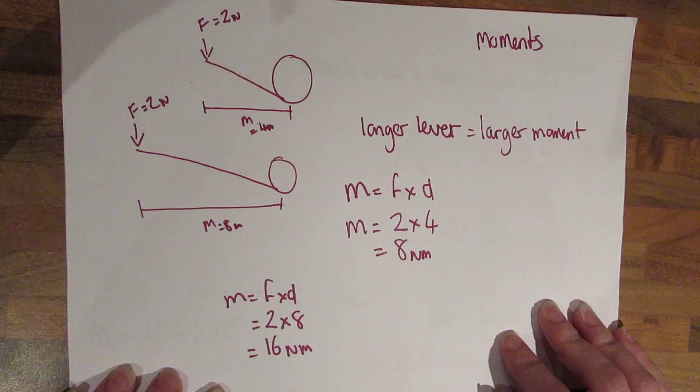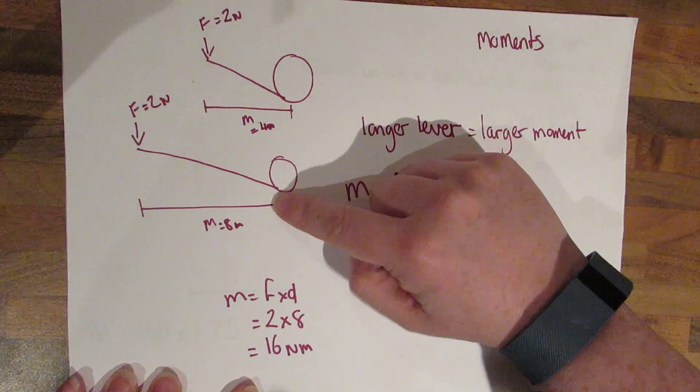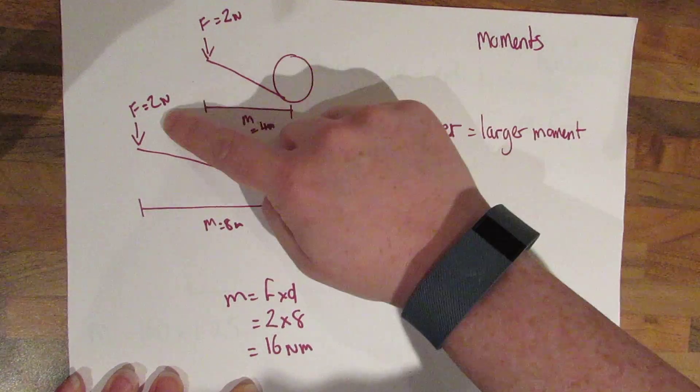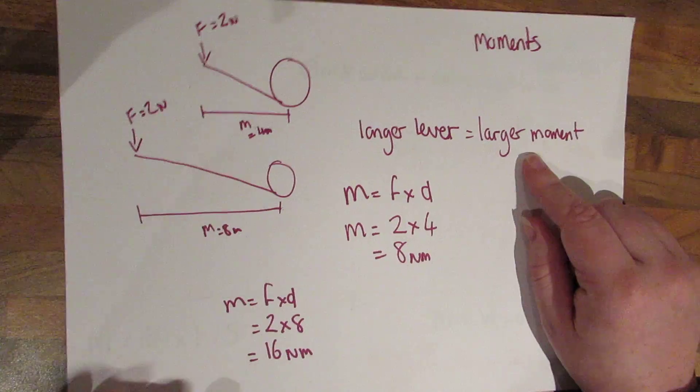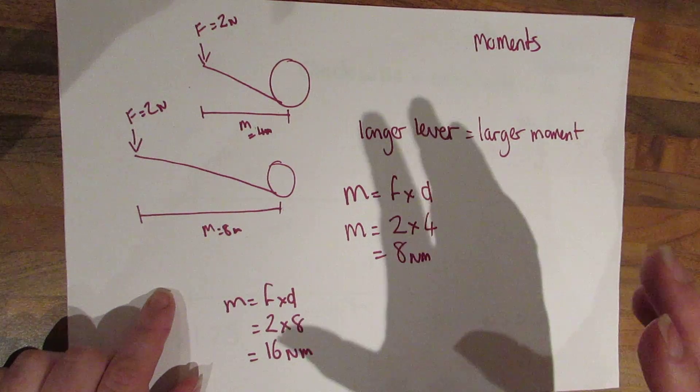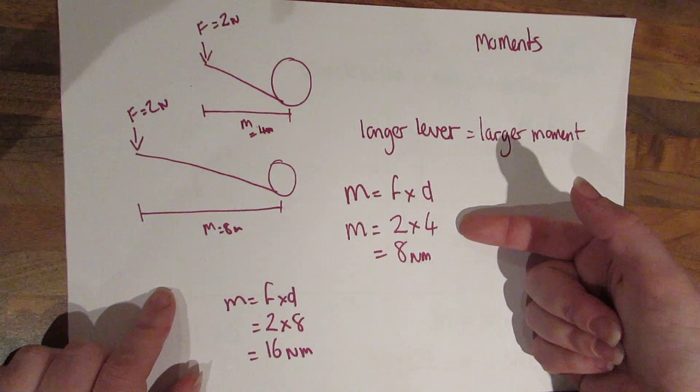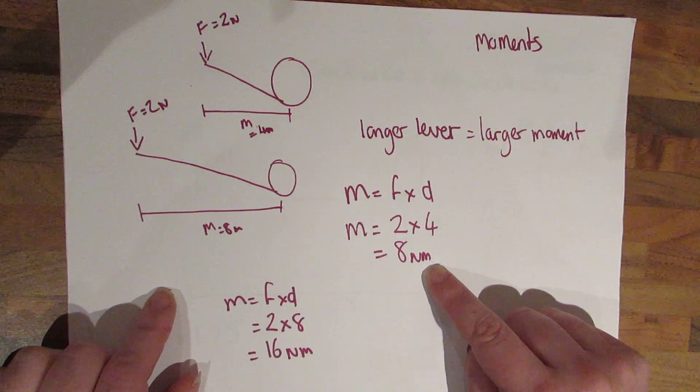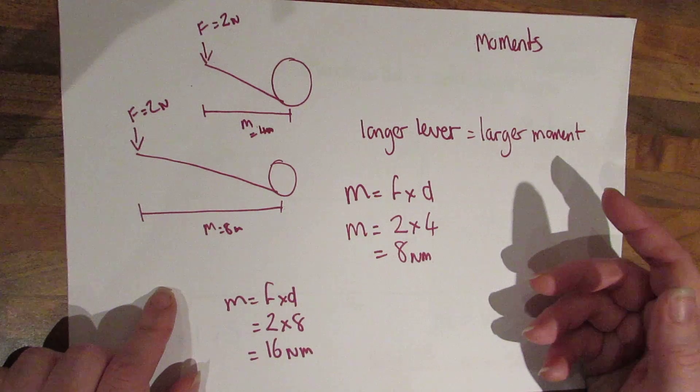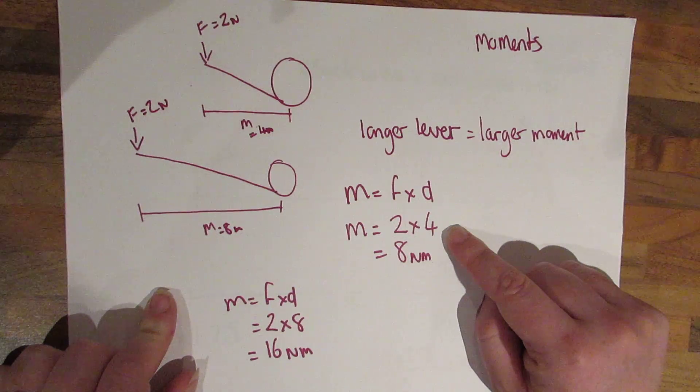You should know that the longer lever you have, you're going to have a larger moment. So here I have two levers of different lengths, both of which are applying force of two newtons. This is our equation, moment equals force times distance. Whenever you do a maths question, I want you to write down the equation, write down your working, give your answer and write the units. If you forget your calculator in the exam, you can still get marks if you write down the working.